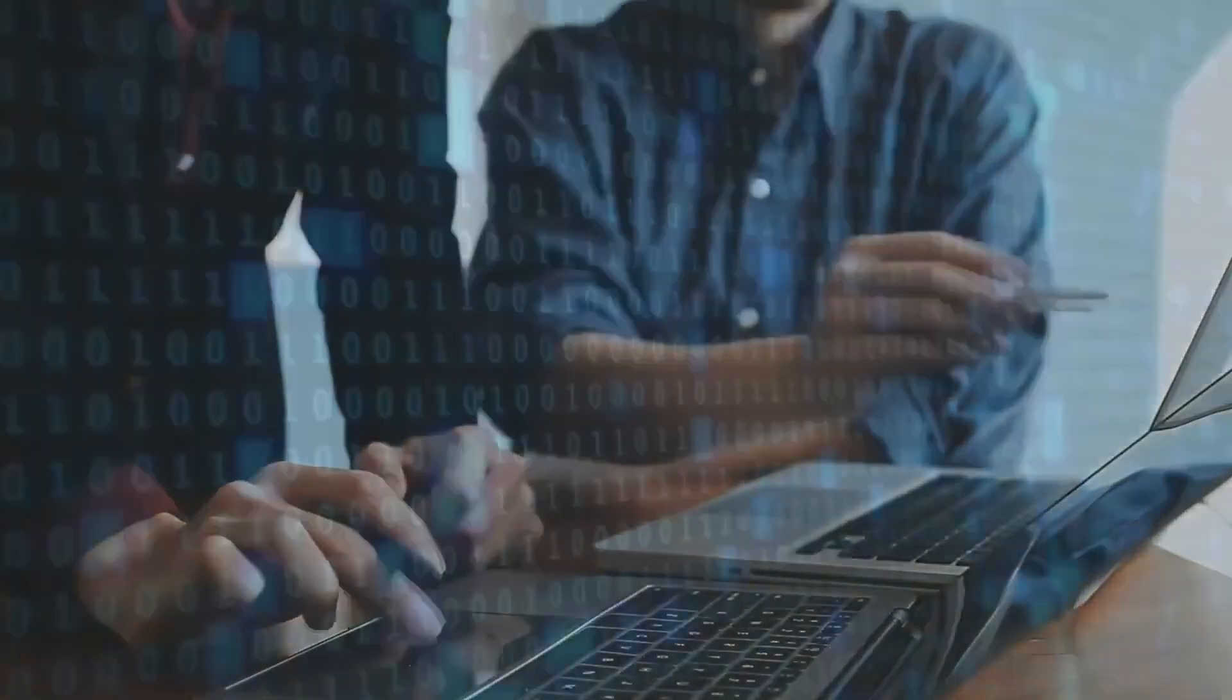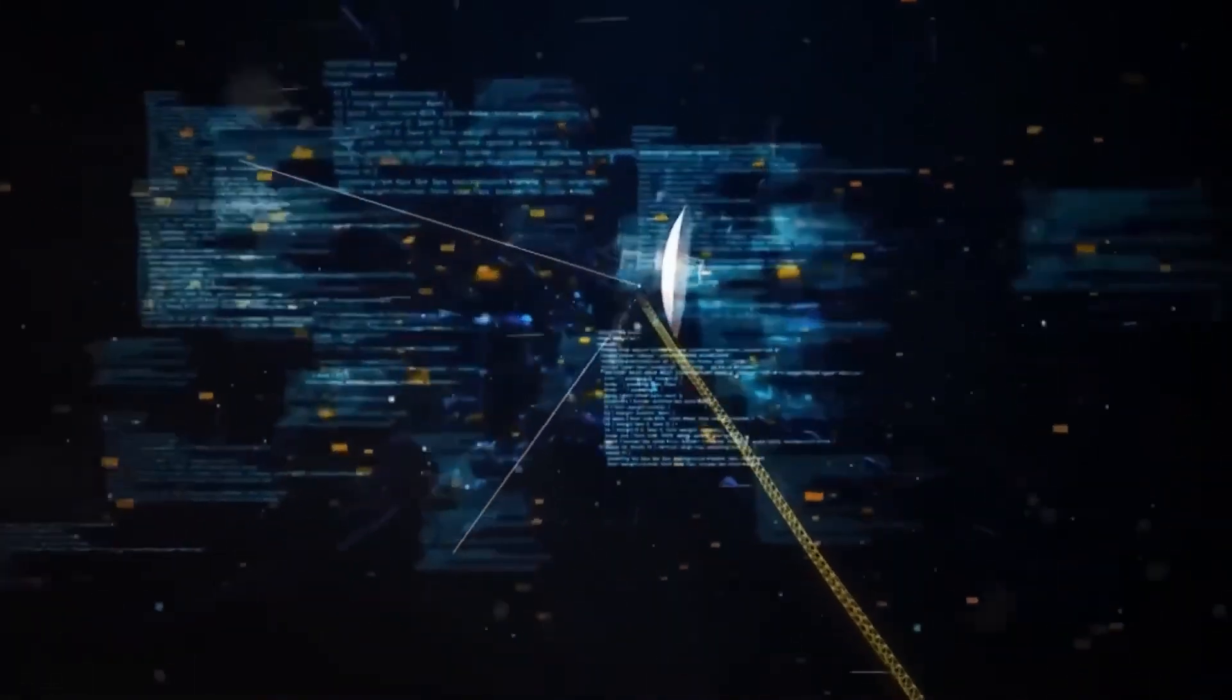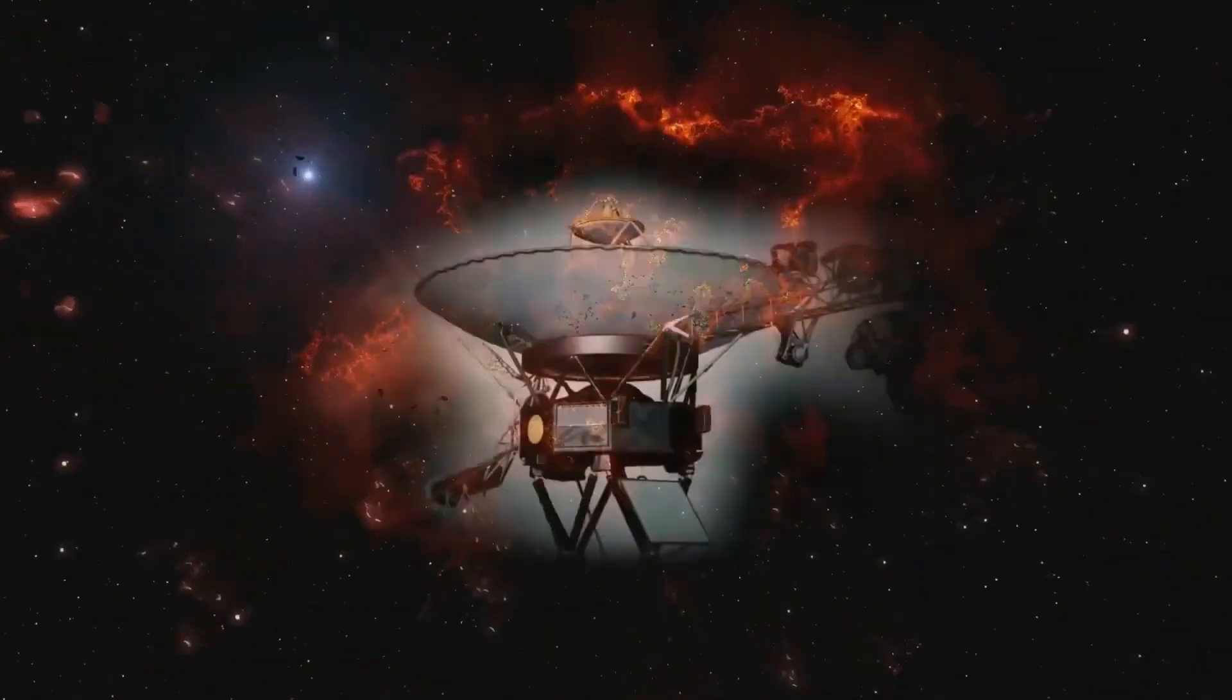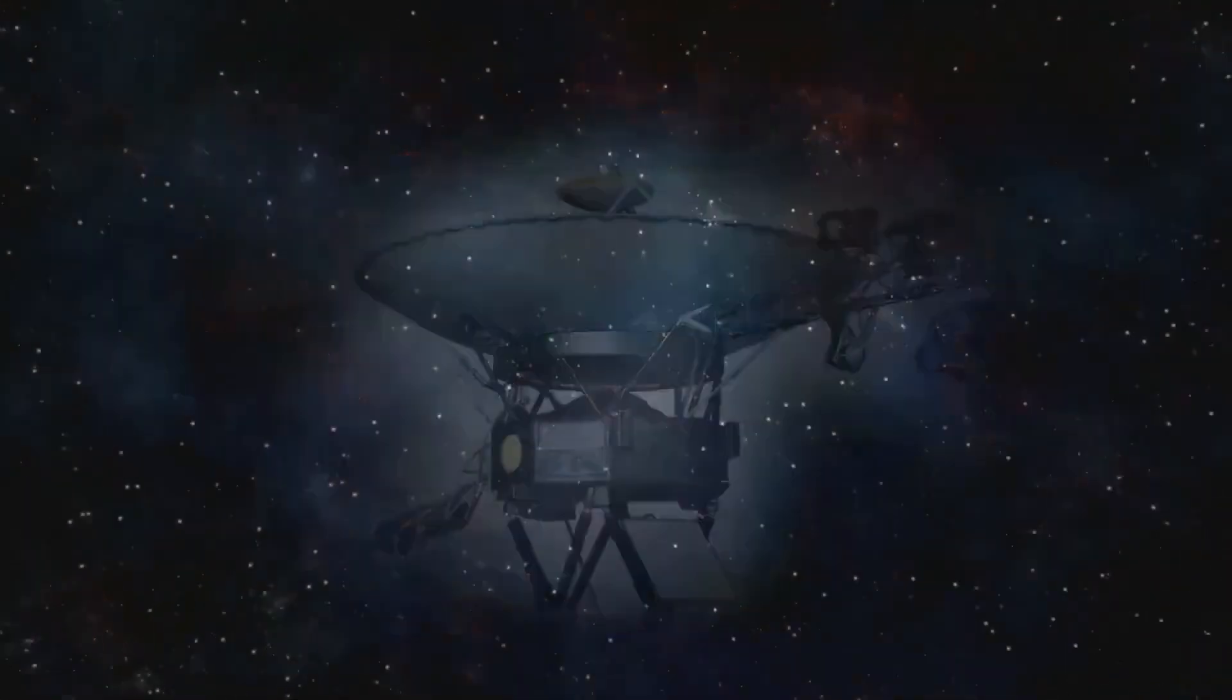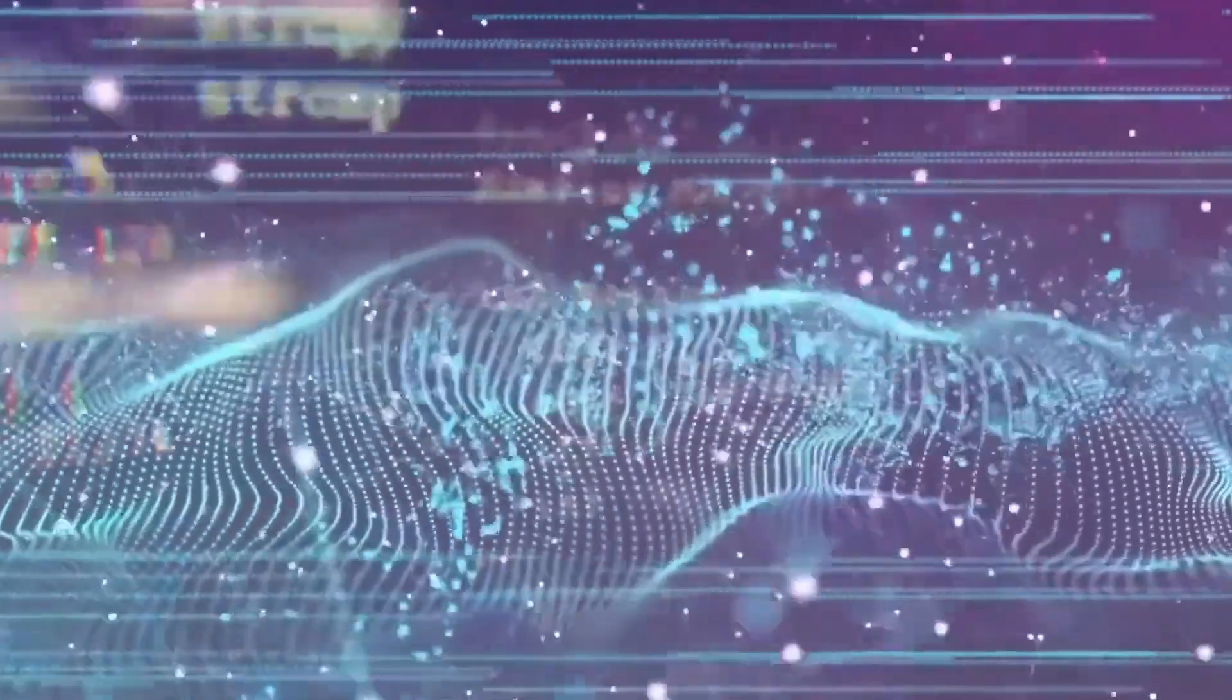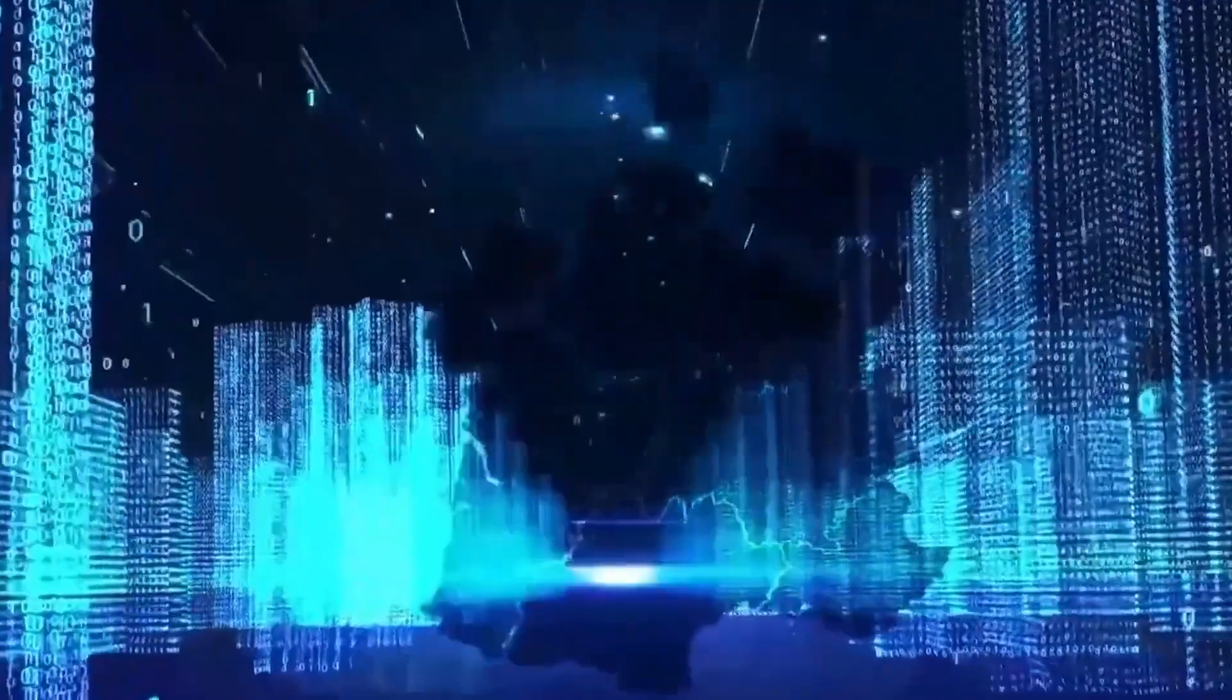If even Voyager's hardened, heat-powered instruments are struggling to survive, what chance would human life have out there? These cosmic rays don't just burn through metal. They destroy DNA. They destabilize electronics. And as Voyager moves deeper into the unknown, it's revealing just how fragile we are in the face of the galaxy's raw forces.